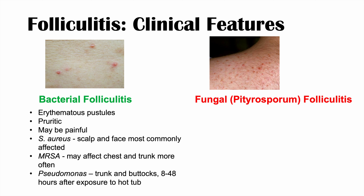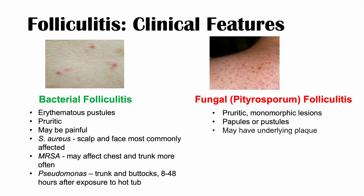The second category is fungal folliculitis, also called Pityrosporum folliculitis. These are pruritic and normally monomorphic in appearance — meaning they all look very similar. They can be papules or pustules, and may also have an underlying plaque, which is a raised skin lesion greater than one centimeter in diameter. If you see that underlying plaque with papules on top, that is more often a dermatophyte infection causing the folliculitis.